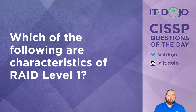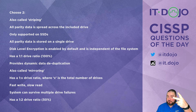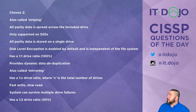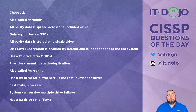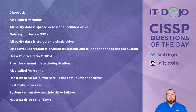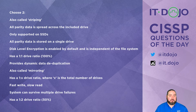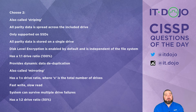First choice says it's called striping — not true, that term is reserved for RAID 0. Second item says parity data is striped across the drives — also not true of RAID 1. Third option says it only works on solid-state drives — absolutely not correct. Fourth option says all parity data is stored on the same drive — RAID 1 doesn't use parity at all, so parity isn't stored anywhere. How about disk-level encryption being enabled by default? Nope, nothing to do with RAID.